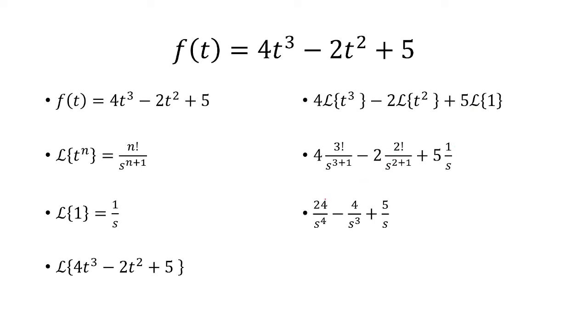Simplifying, we have 24 over s to the 4th minus 4 over s cubed plus 5 over s. And that is our answer. Thank you.